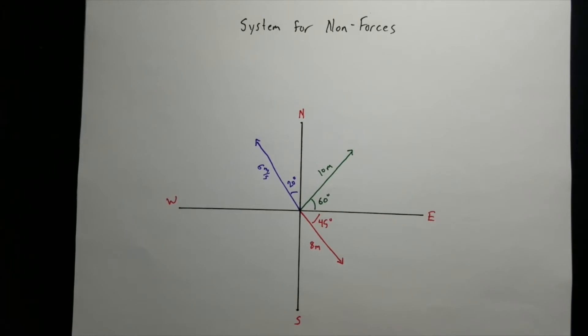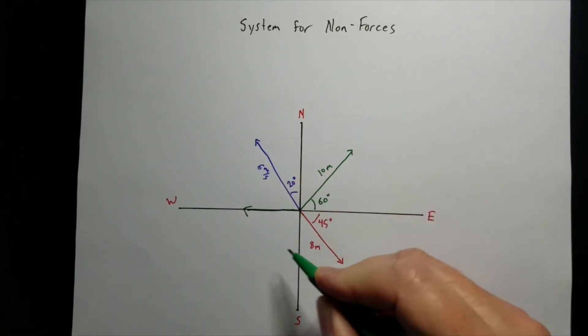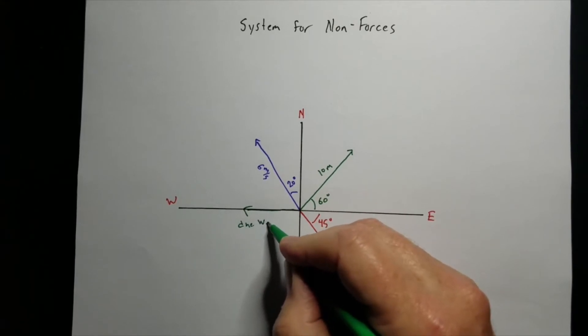If the vector is right along one of these directions, we would simply call it due and the direction, like this will be due west.